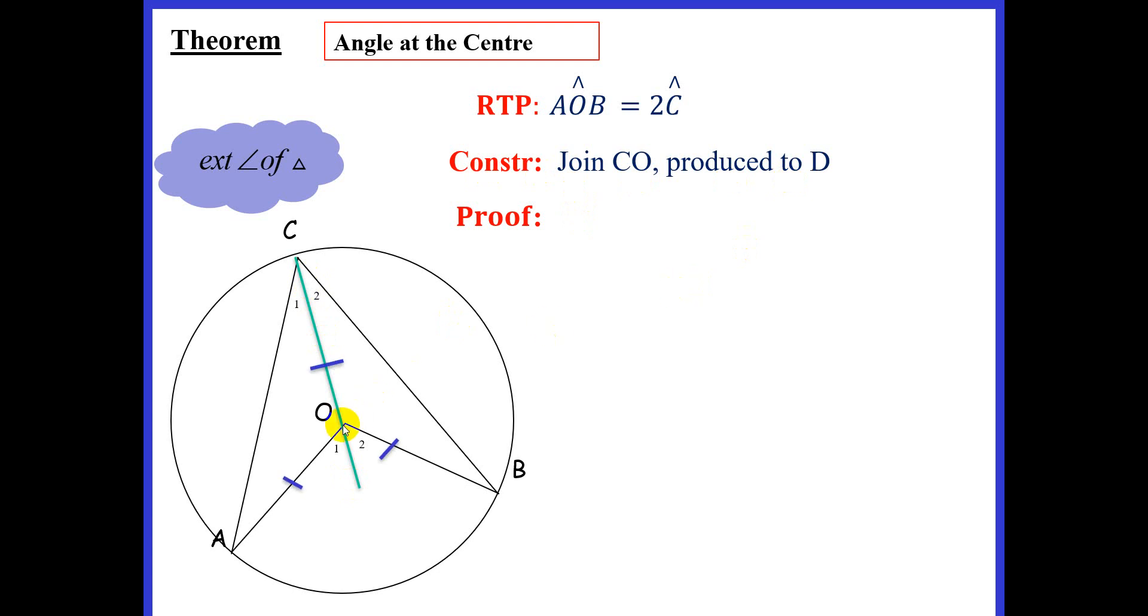Now, if O is the center of the circle, we know that AO, CO, and BO are radii, and they are all equal. So we're ready to start.